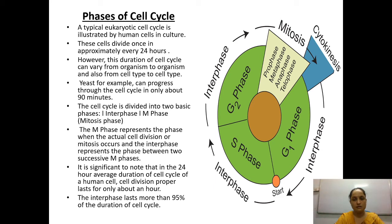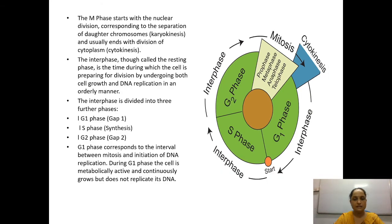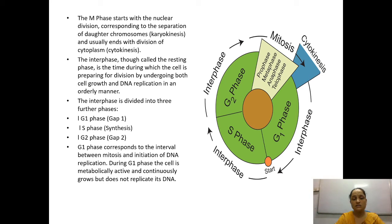The interphase lasts more than 95 percent of the duration of the cell cycle, as shown in the diagram. The M phase starts with nuclear division corresponding to the separation of daughter chromosomes — this is called karyokinesis (karyo = nucleus, kinesis = movement/formation), which is nuclear division. It is followed by cytokinesis — the division of the cytoplasm. So we divide the nucleus first and then the cytoplasm.